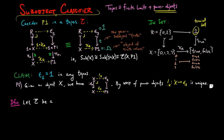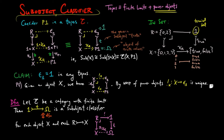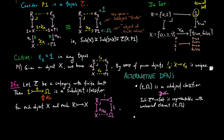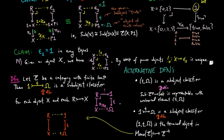We can now give the definition. Let E be a category with finite limits. Then the morphism t with domain as a terminal object and codomain capital Ω is a sub-object classifier, provided for each object X and each sub-object R of X, there exists a unique morphism χ_R such that the following diagram is a pullback. It is easy to prove that this definition is equivalent to the following alternative definitions. First, t: 1→Ω is a sub-object classifier provided the following pre-sheaf is representable with universal element tΩ. We can also define t from 1 to Ω as the sub-object classifier provided 1_t_Ω is the terminal object in the category of monomorphisms of E, which is a full subcategory of the morphism category of E consisting of monomorphisms as objects. This characterization allows us to say the sub-object classifier instead of a sub-object classifier, since it is uniquely defined up to unique isomorphism.